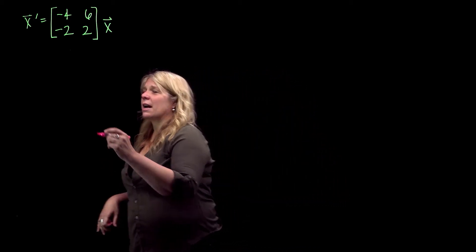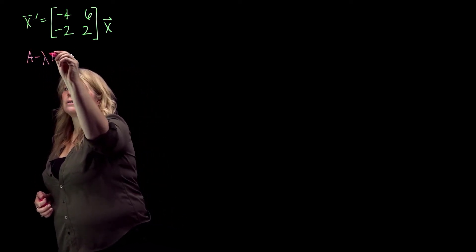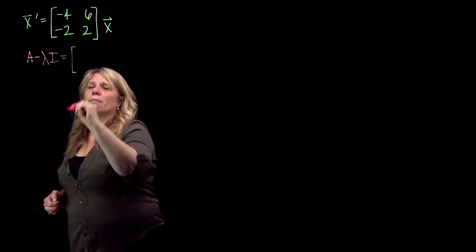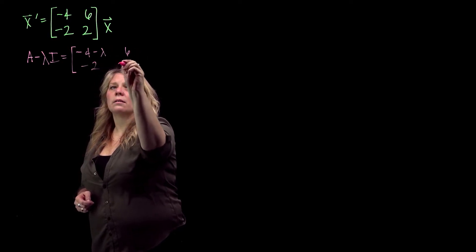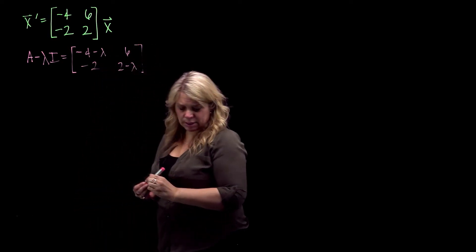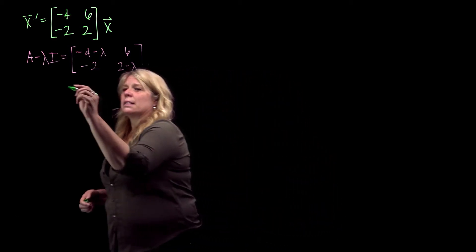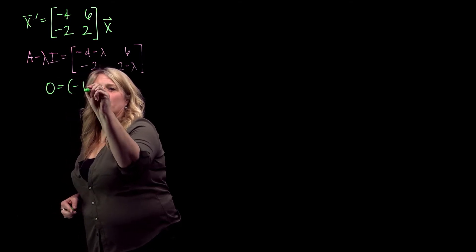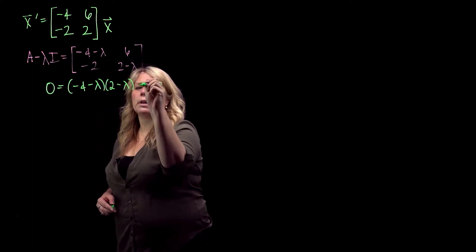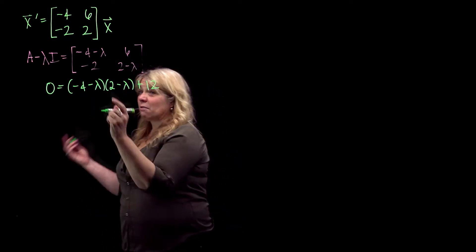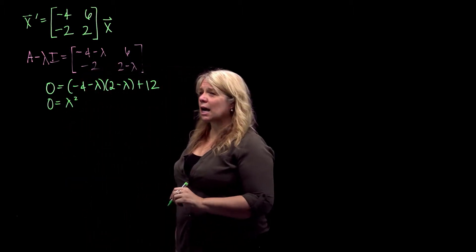You want to start by finding the eigenvalues. This is how our textbook does it: A minus lambda I. And then we're going to take the determinant of that and set it equal to zero. So we'll have zero equals negative 4 minus lambda, times 2 minus lambda, plus 12. We're going to be really careful when we multiply this all out, because this is a common place for mistakes.